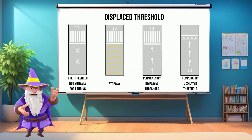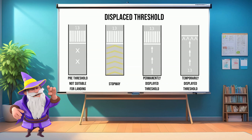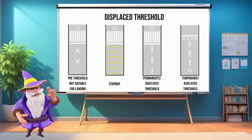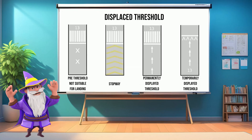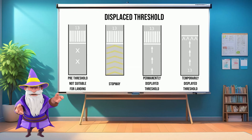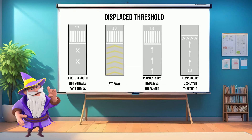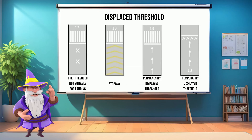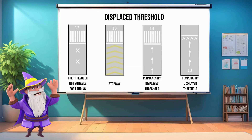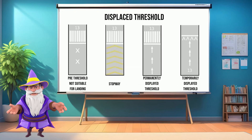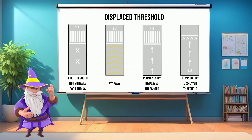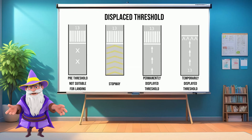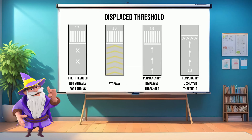Why do airports have displaced thresholds? There are a few reasons. First, obstacle clearance — if there are buildings, trees, or terrain in the approach path, shifting the threshold ensures arriving aircraft have a safe glide slope. Second, runway condition — the first section of a runway may be worn out or damaged and unsuitable for landing impact, but still usable for taxi or takeoff.